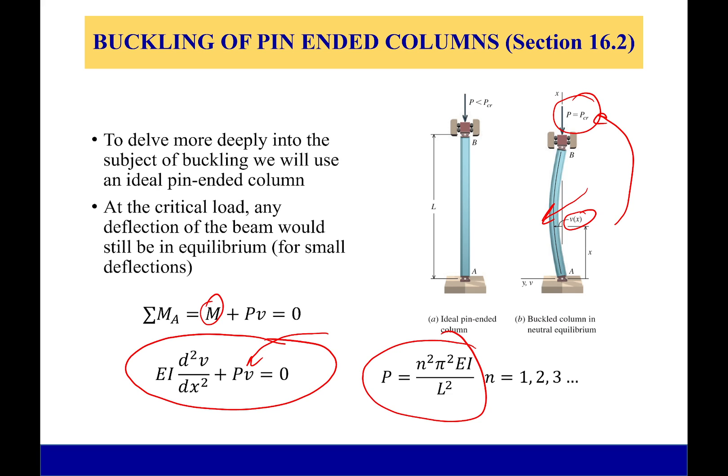This is for an ideal pin-ended column, and you notice there's n right here—it's one, two, three. So there's actually several different states that this could be in. What do I mean by these several different states? Let's look at it.